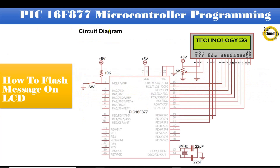Here is the circuit diagram we are using in our project. It is the PIC16F877 microcontroller. Pin number 1 is master reset — if we press the switch it will reset the microcontroller. Port C is interfaced with the LCD data pins. We are using a 16x2 character LCD; all data pins D0 to D7 are interfaced with Port C. Pin RD0 is interfaced with the EN pin, pin RD1 with the RW pin, and pin RD2 with the RS pin. Pin VSS connects to ground, pin VDD connects to positive 5V. The contrast pin VEE connects to a variable resistor of 5 kΩ. Pin numbers 13 and 14 interface with an 8 MHz crystal, and 22 pF capacitors are connected with the crystal. Pin numbers 11 and 32 connect to positive 5V, and pin numbers 12 and 31 connect to ground.